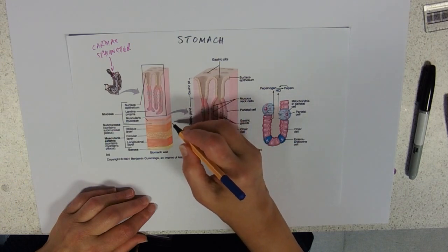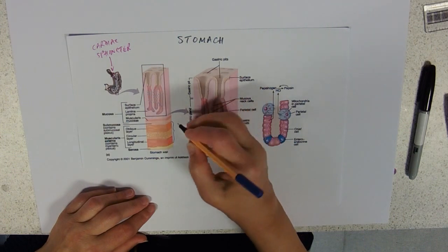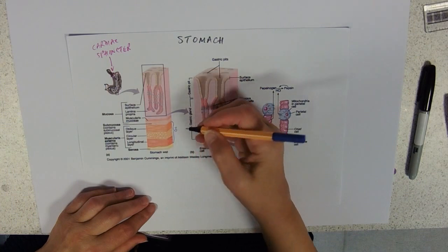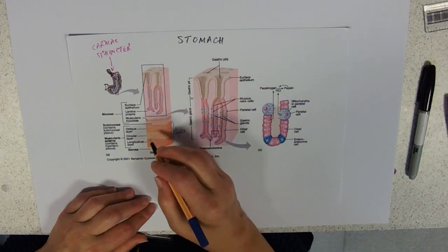The major modification of the stomach is that you've got an extra layer of muscle. So that muscle, instead of having two layers—circular and longitudinal—has three layers with an additional oblique layer.